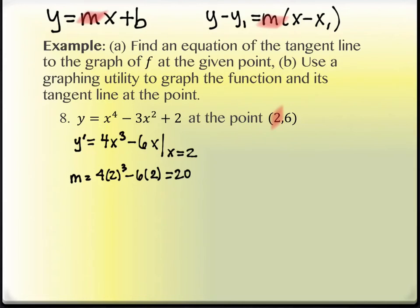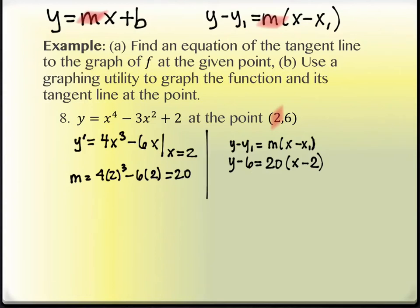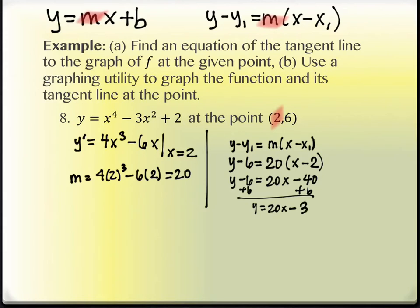Using point-slope form with our given point: y minus y1 equals m times x minus x1. The y1 value is 6, the slope m is 20, and x1 is 2. So y minus 6 equals 20 times x minus 2, which simplifies to y minus 6 equals 20x minus 40, and adding 6 gives y equals 20x minus 34. That's our tangent line equation.